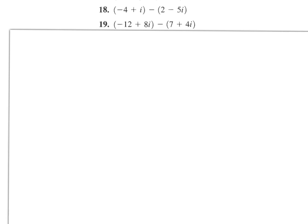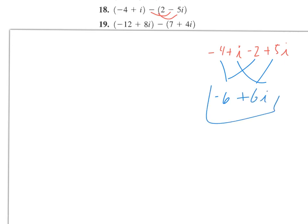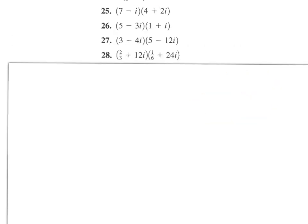Let's start on number 18. We just need to distribute that negative in there and then combine like terms — this is not multiplying, it's really just combining like terms. We do the real numbers first: that's going to be negative six, and then the imaginary numbers would be plus six i. There's our answer.